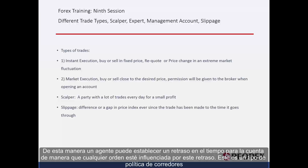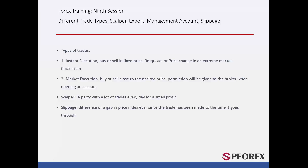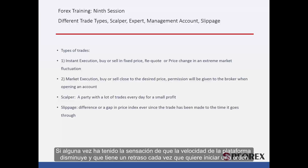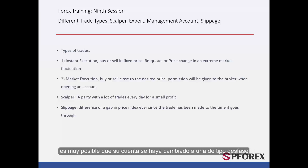A broker can set a delay time for the account so that any order is influenced by this delay. This is a type of broker's policy. If you ever feel that the platform speed is reduced and you have a delay every time you are interested in placing an order, it is possible that your account has been changed to a slippage type.